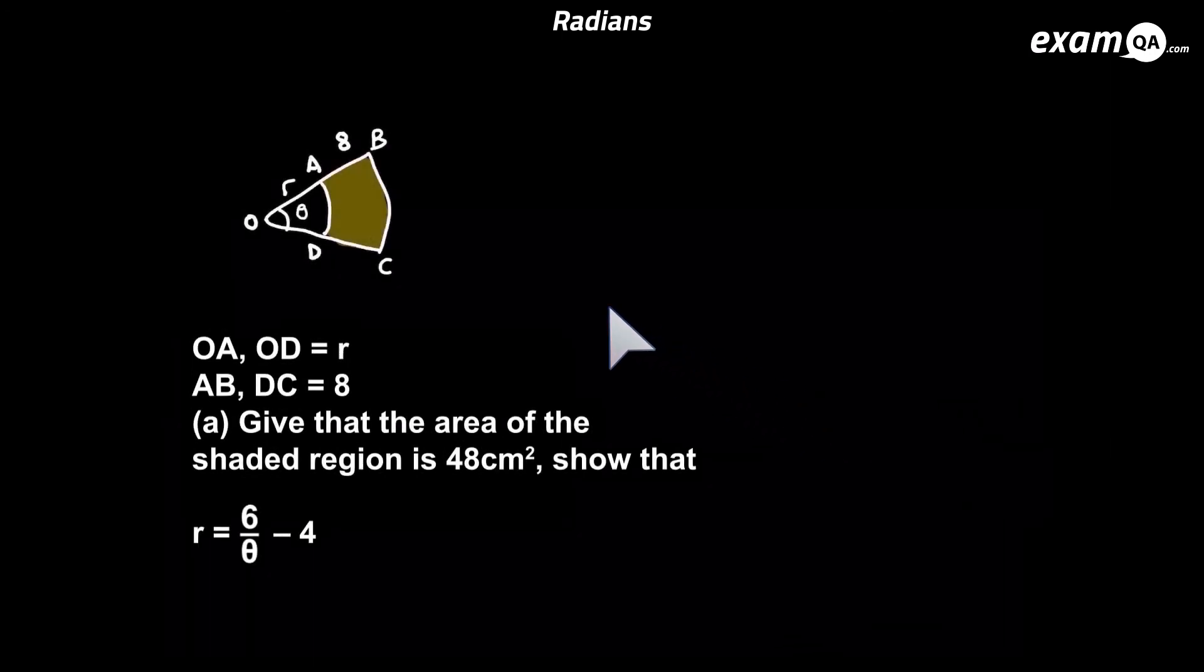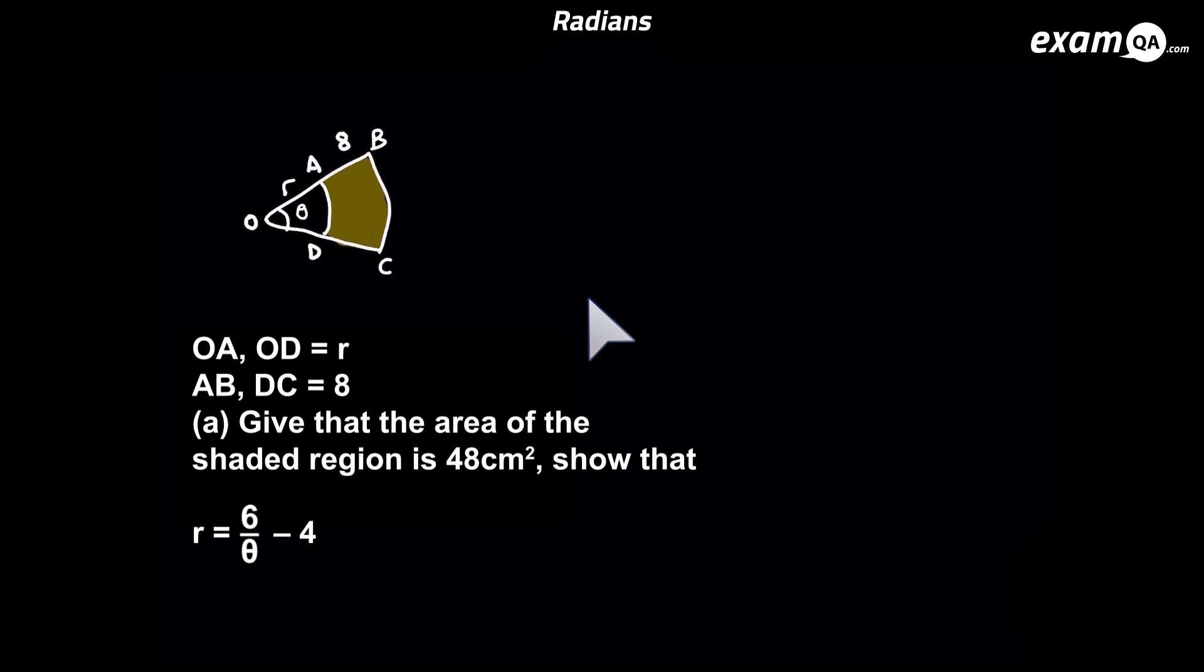Okay, so let's have a look at a question. I'll give you a moment to read this question. So it's told us that the shaded area is 48. And using that information, we need to prove this expression for R. Since we know that the shaded region is 48, let's go ahead and make an expression for that shaded region. We can simply work out the shaded region and equate it to 48.